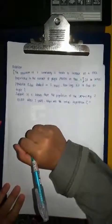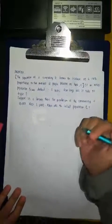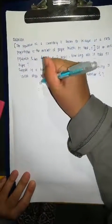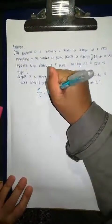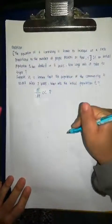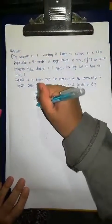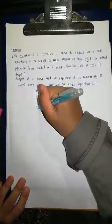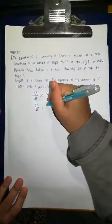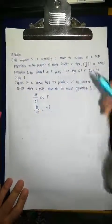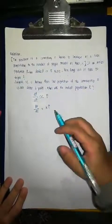From this sentence, we know that the population of community is known to increase at a rate proportional to the number of people present at time T. So, dP/dT is directly proportional to P. With that, dP/dT is equal to KP.